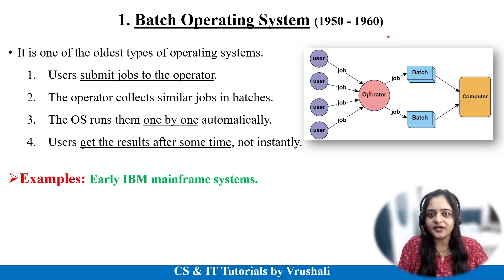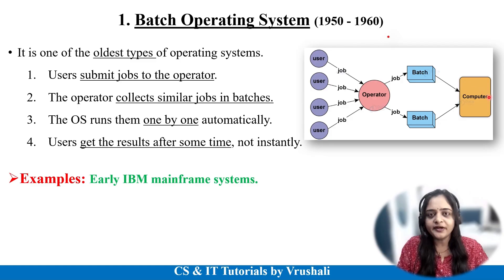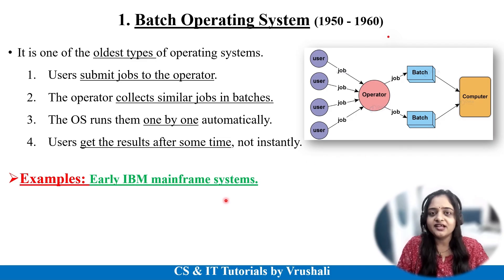The responsibility of the operator is to make a group of similar types of instructions and maintain the batches. So these two users who want to execute a C programming file — the operator makes a batch of similar types of instructions. In this way they make multiple batches, and these batches are sent forward to the computer. The operating system then executes all these batches one by one. Users cannot get the result instantly; they get the result after some time. This batch operating system concept was generally used in the earliest IBM mainframe systems.